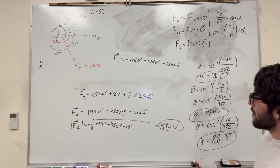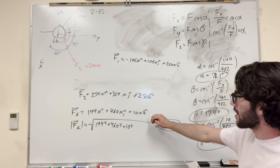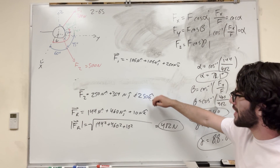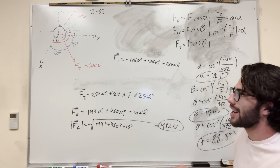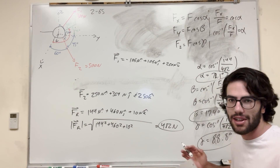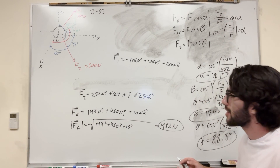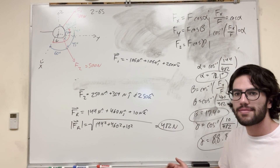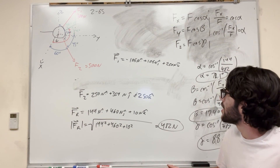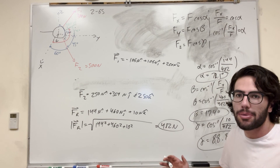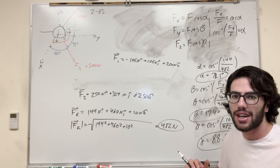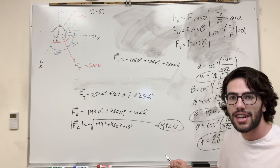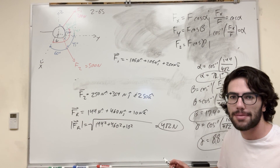So we have the resultant force, its Cartesian vector form, and the components of the Cartesian vector form for Force 1 and Force 2 — that's everything this problem asked for. Thanks for watching. If you need more help with your statics homework, feel free to come back. I'll be doing more problems in the future. See you next time.